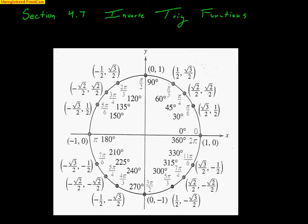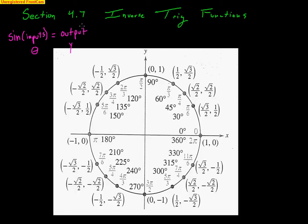Inverse functions are simply functions where the output and the input get switched around. So let's talk about regular functions to start. The sine function takes inputs — the inputs are angles — and the output we get from a sine function is the y-coordinate from the unit circle. We usually refer to that input as theta, and the output for sine is the y-coordinate, or opposite over hypotenuse if we're talking about a triangle, or y over r if we're not on the unit circle.